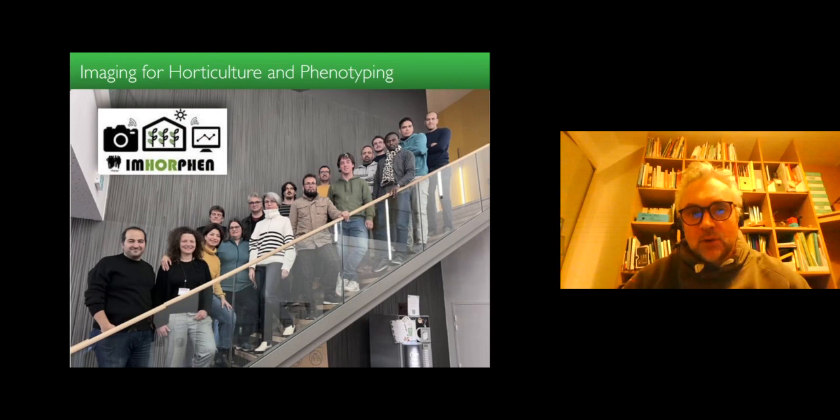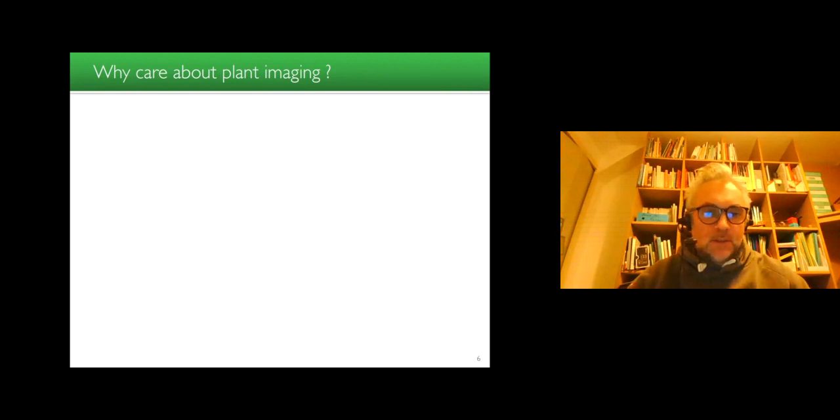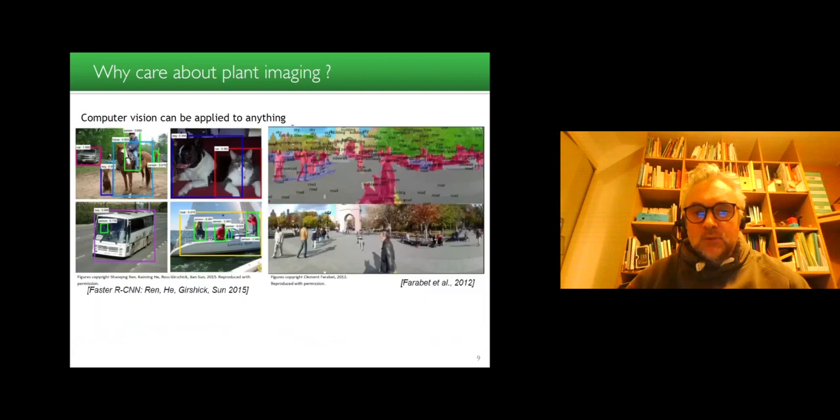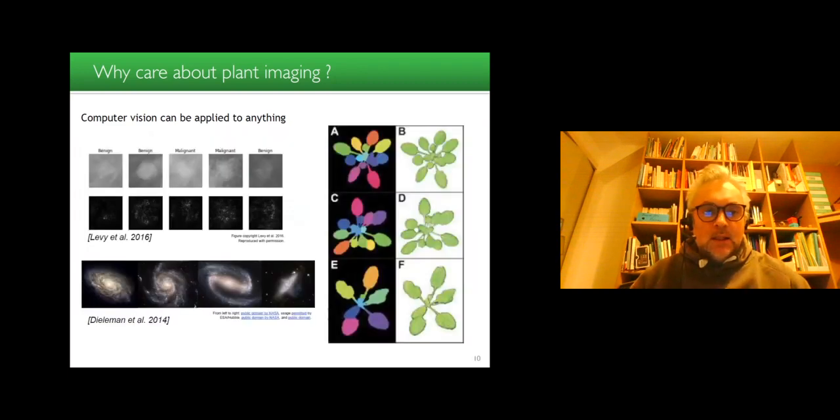This is our group entitled Imaging for Horticulture and Phenotyping. And you may wonder why we care about plant imaging. Computer vision can indeed be applied to anything. And if you care about art, you can use computer vision to produce nice images. If you don't care really about what your techniques will be applied, you can monitor all kinds of populations, populations of animals, but also populations of humans for the best and the worst applications. One specific domain of interest in my view is applying computer vision in life sciences for medical applications for the observation of our Earth or of the universe.